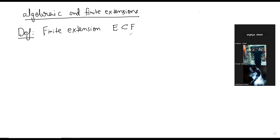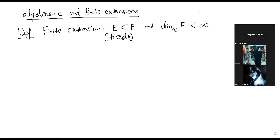E is contained in F. The dimension of F over E is finite — that is the definition. Is this clear? Do you understand what these terms mean? Yes, okay. So this is vector space dimension. This is also denoted like this, or it is denoted like this.